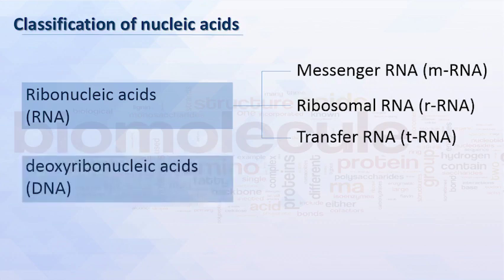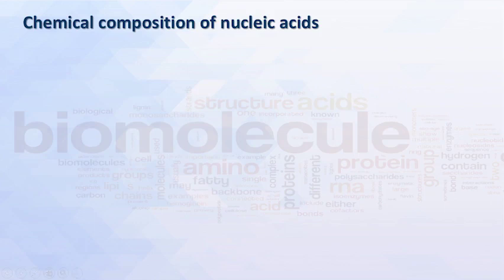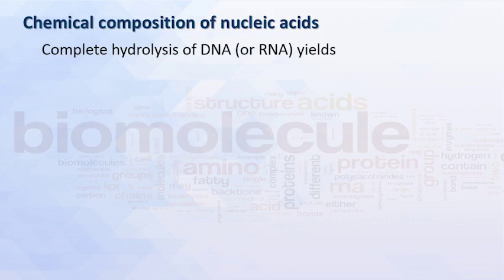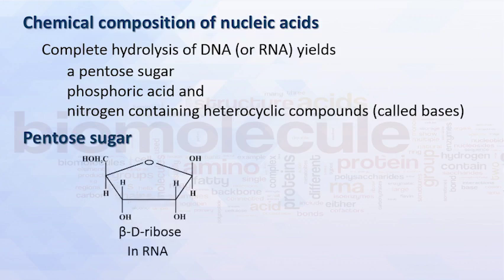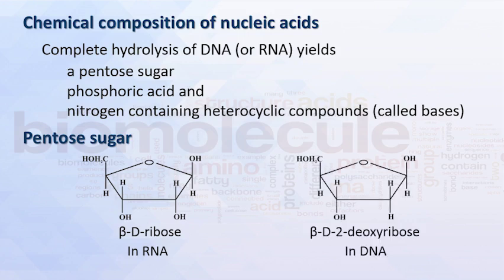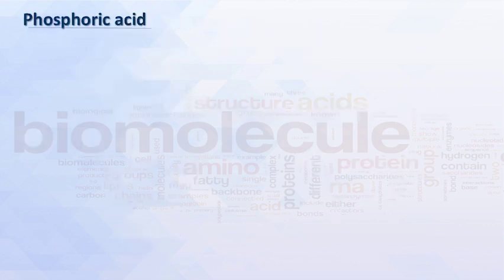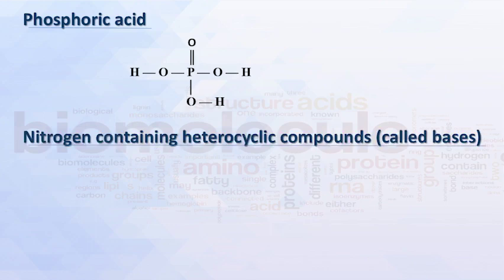The other nucleic acid is deoxyribonucleic acid. Chemical composition of nucleic acids: complete hydrolysis of DNA or RNA yields a pentose sugar, phosphoric acid, and nitrogen-containing heterocyclic compounds called bases. The pentose sugar in RNA is beta-D-ribose, and in DNA it is beta-D-deoxyribose, along with the phosphoric acid unit.